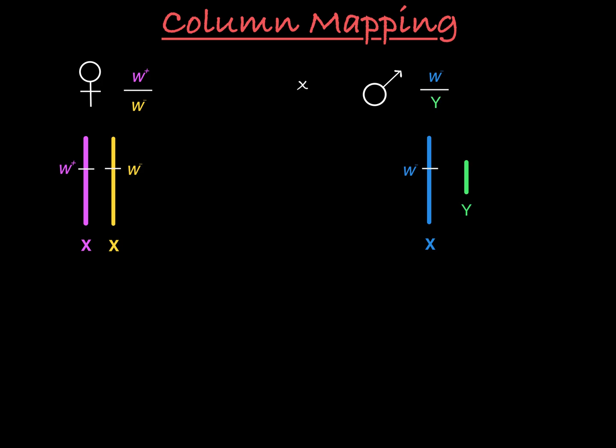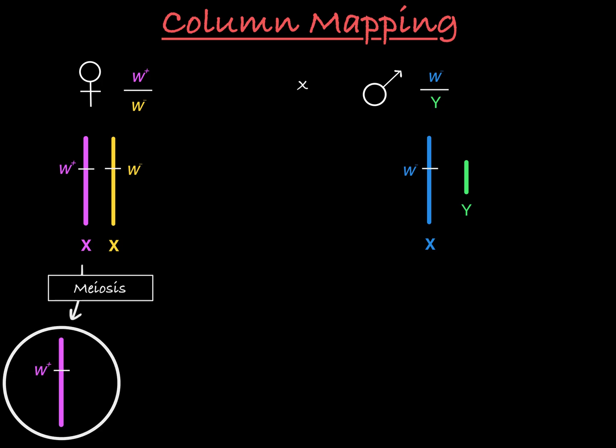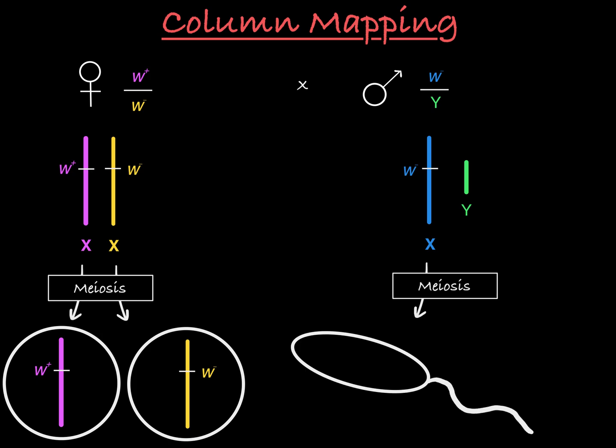Remember that chromosomes travel as a unit in meiosis, and a parent will only donate one of each type of chromosome to its offspring. So this female will either give her eggs the chromosome carrying the W plus allele or the chromosome carrying the W minus allele. Similarly, in meiosis, this male can give his sperm either his X carrying the W minus allele or his Y chromosome.